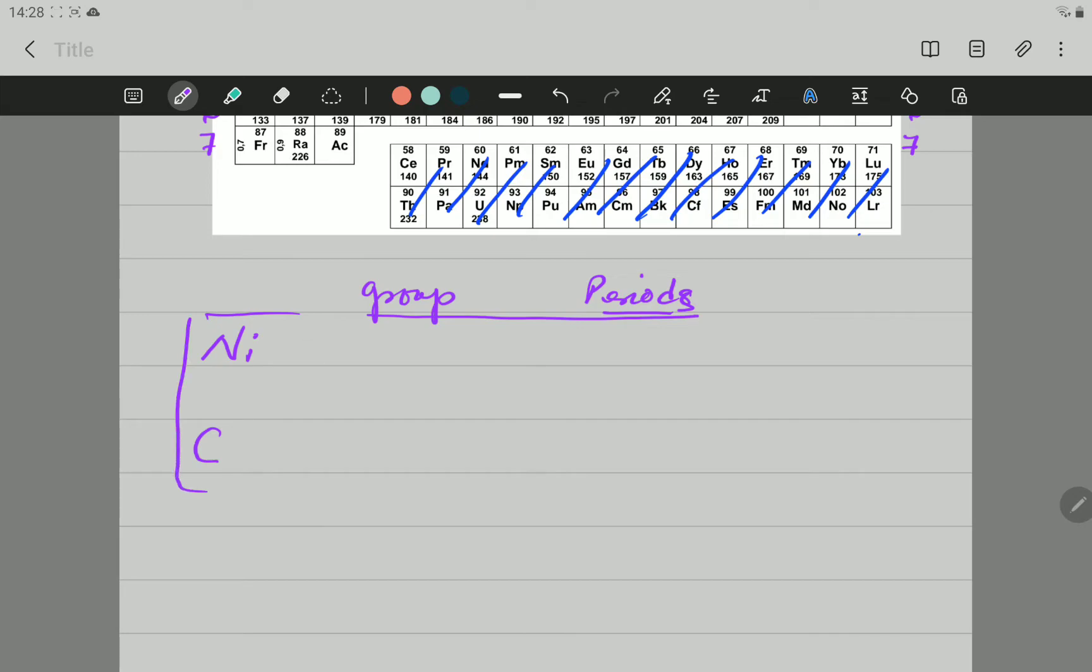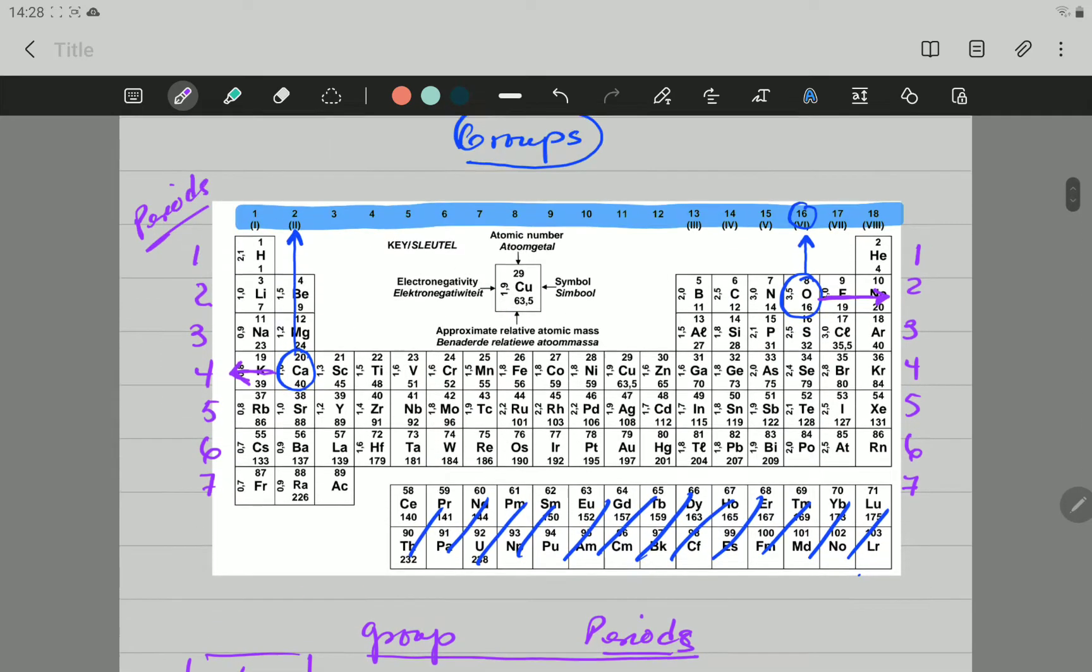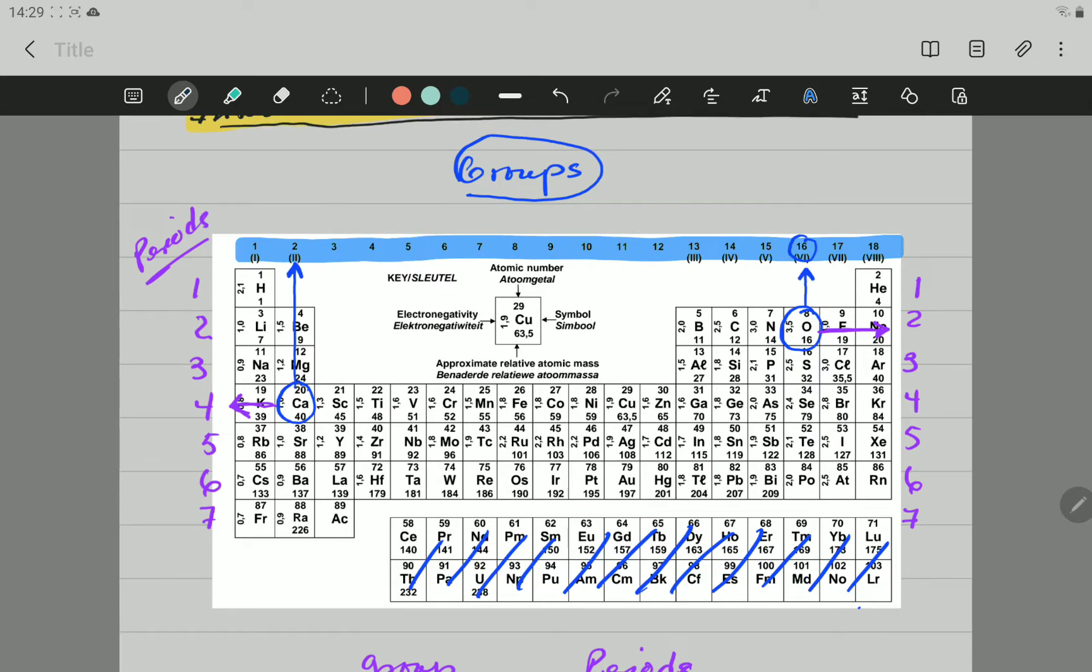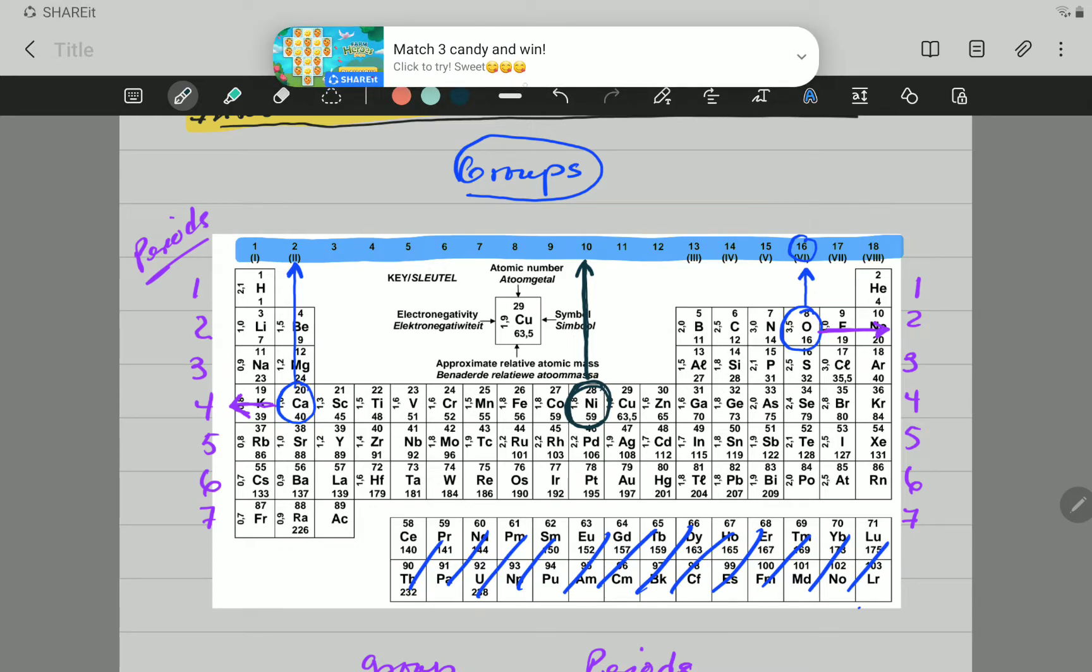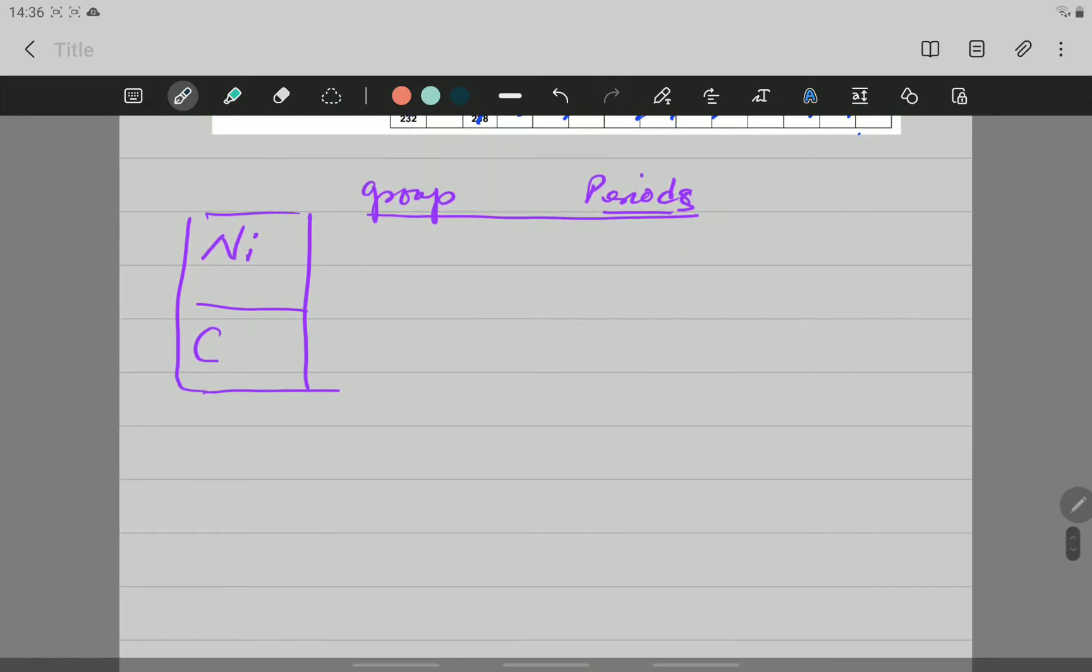So, for Nickel, the first thing we have to identify is where is Nickel in the Periodic Table. Alright? You go to the Periodic Table. You look Nickel is allocated here. So, in what group is Nickel? All the way up here. That one is. So, we see that Nickel is in Group 10. And the other question was about Carbon.